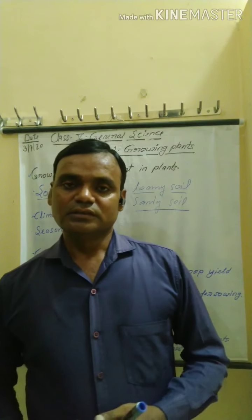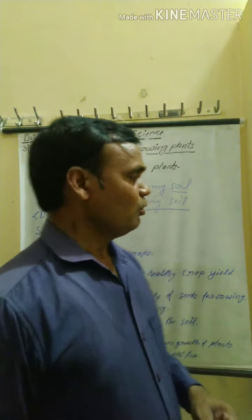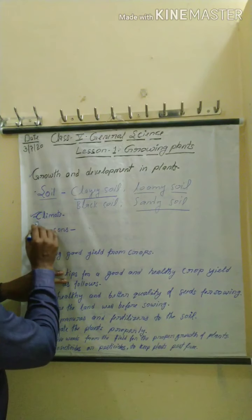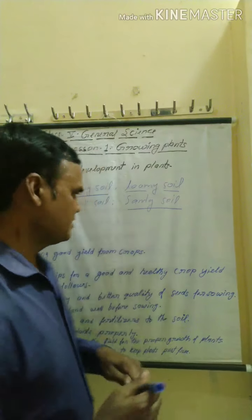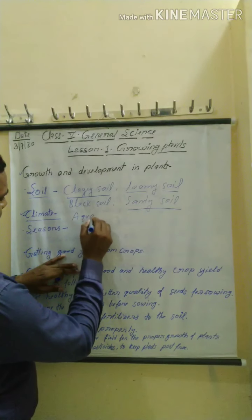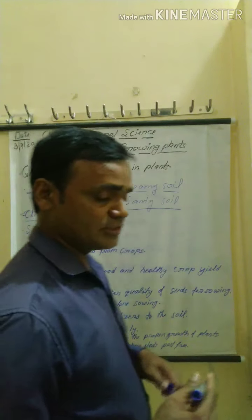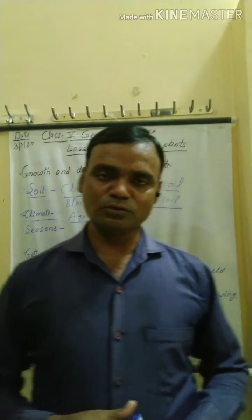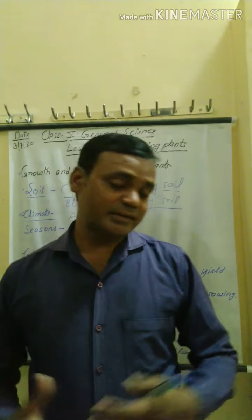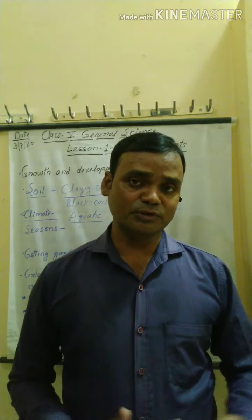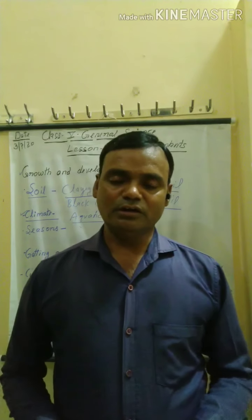Rubber and coconut grow in moist and salty soils. Next factor is climate. Climate is also responsible for the growth of plants. Some plants are aquatic, some grow in mountain regions, and some grow in different climatic conditions. Aquatic plants grow well in water — wherever water bodies are available, aquatic plants grow there, as they require a lot of water.